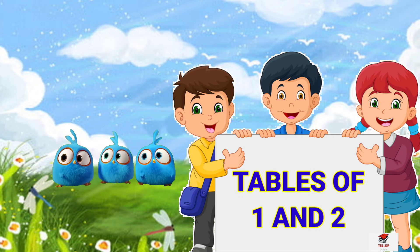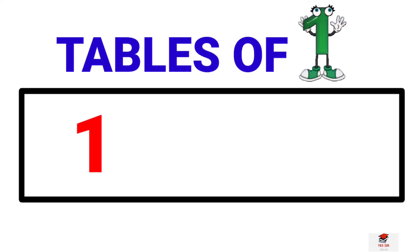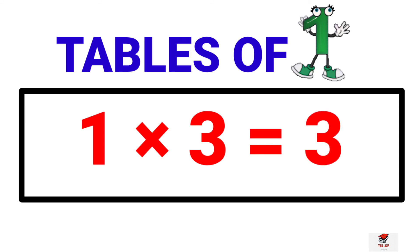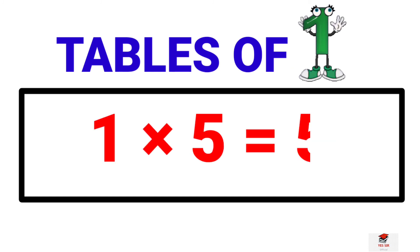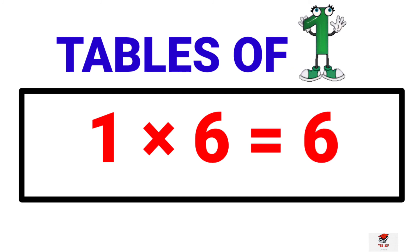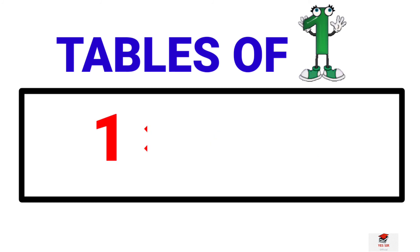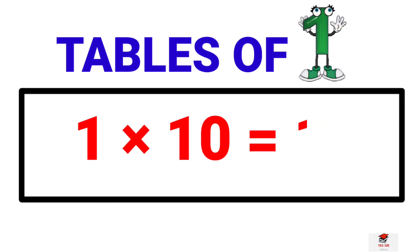Our next chapter is tables of 1 and 2. Table of 1: 1 one is 1, 1 two is 2, 1 three is 3, 1 four is 4, 1 five is 5, 1 six is 6, 1 seven is 7, 1 eight is 8, 1 nine is 9, 1 ten is 10.